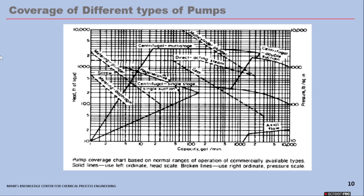Here we see the pump coverage chart based on normal ranges of operation of commercially available types. The vertical axis shows head in feet of liquid, and the horizontal axis shows capacity in gallons per minute. Solid lines use the left ordinate (head scale); broken lines use the right ordinate (pressure scale in PSI). In the lower capacity, high-pressure range, you can see metering diaphragm pumps and metering plunger pumps — very high PSI values. Centrifugal pumps appear in the middle of the range. Gear pumps have higher capacity and can also reach high pressures. Axial flow pumps are at very low head but very high capacity.